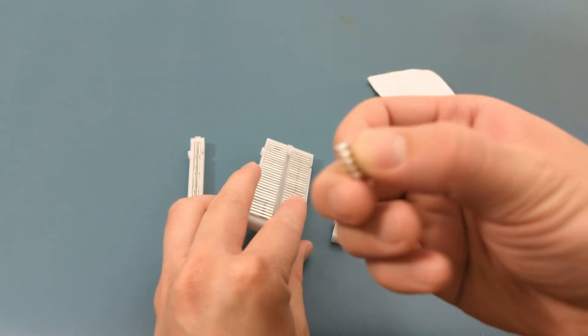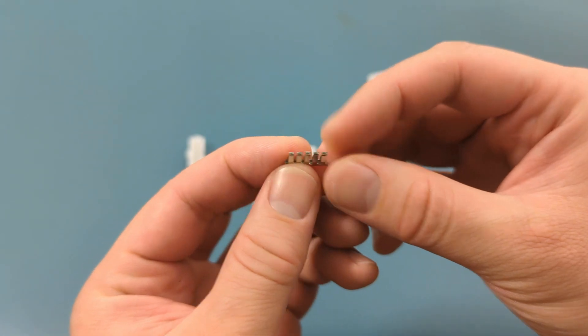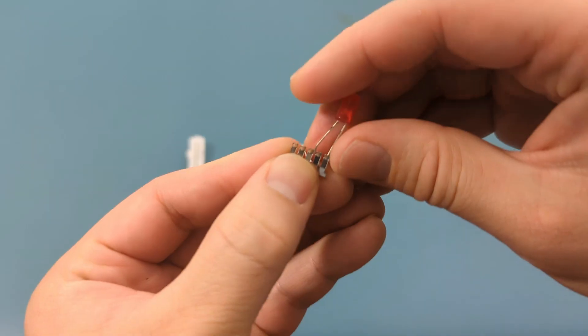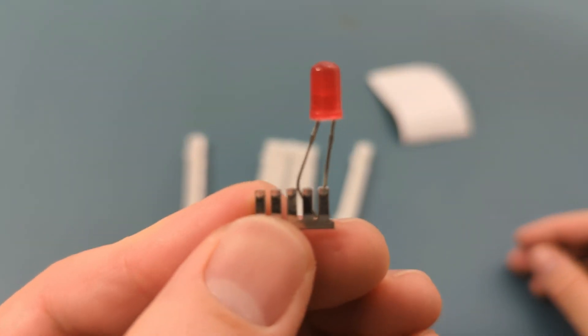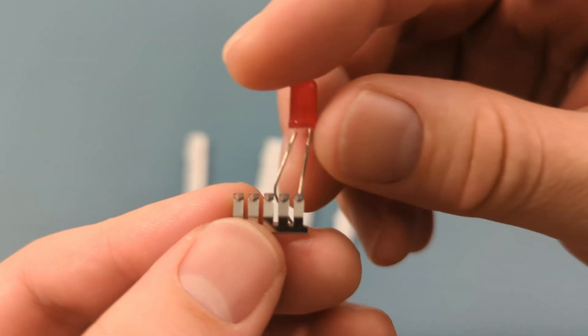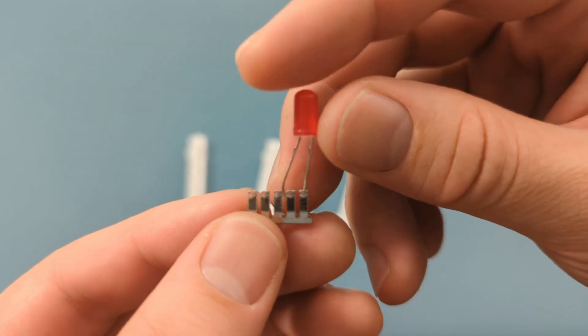One metal strip makes up half the column of the breadboard. These metal strips are what make the electrical connections for you. It's like having invisible wires inside the board that connect your components together.